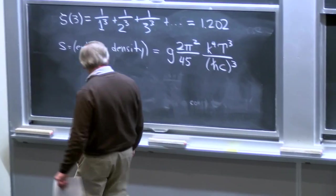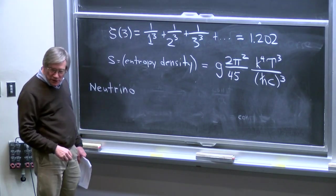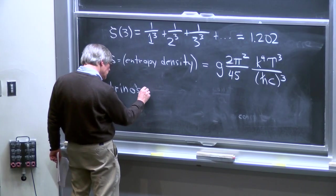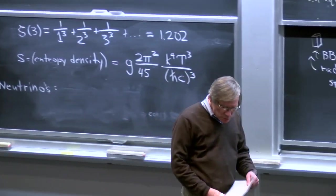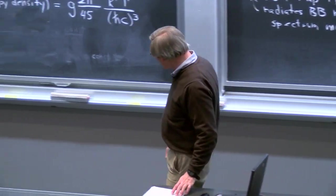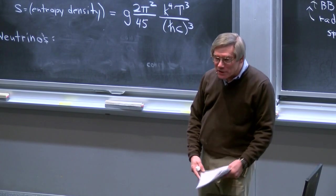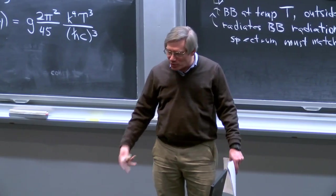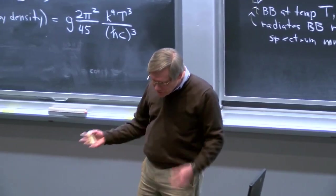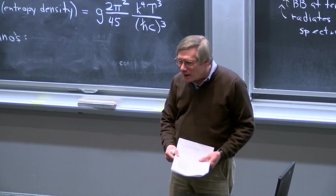The next topic is neutrinos, which contribute significantly to the radiation energy density in the universe. Neutrinos were long thought to be massless, but around 2000 we learned they have a very small mass. Cosmologically, neutrinos still act as if they were massless for almost all purposes we deal with in this class. Although if we were interested in neutrino effects on structure formation, the small but non-zero neutrino mass would matter.